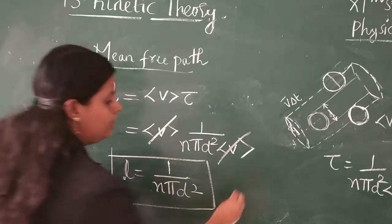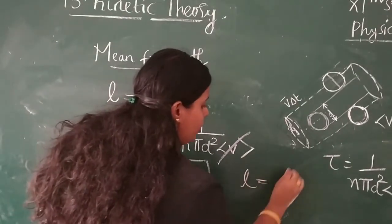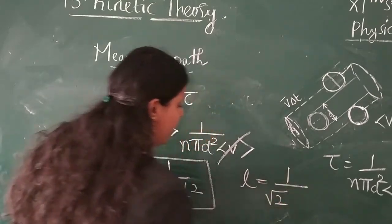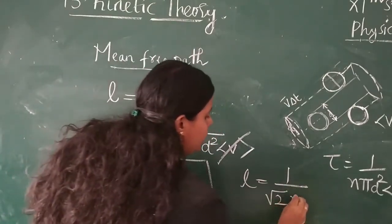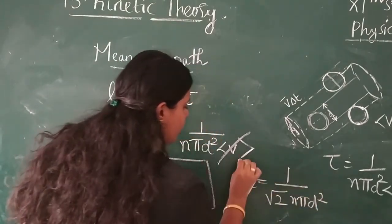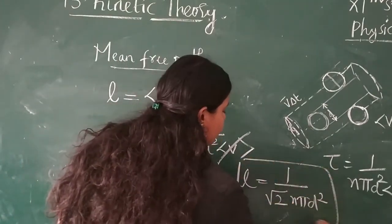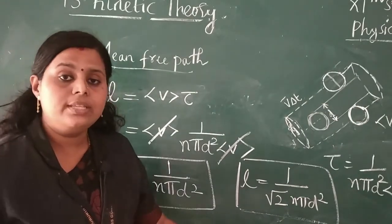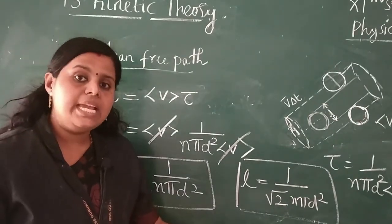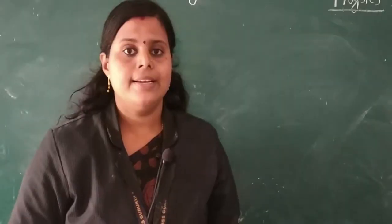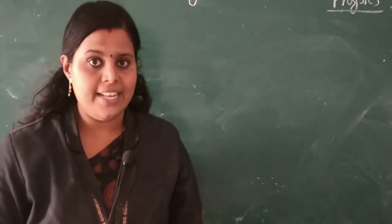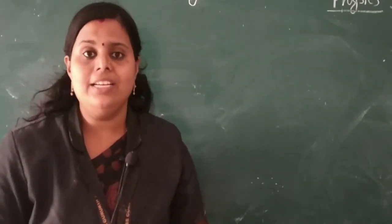When corrected for the relative motion of molecules, the more accurate expression for mean free path is λ = 1/(√2 × nπd²). That's all about the 13th chapter on Kinetic Theory. Hope you understood this chapter.